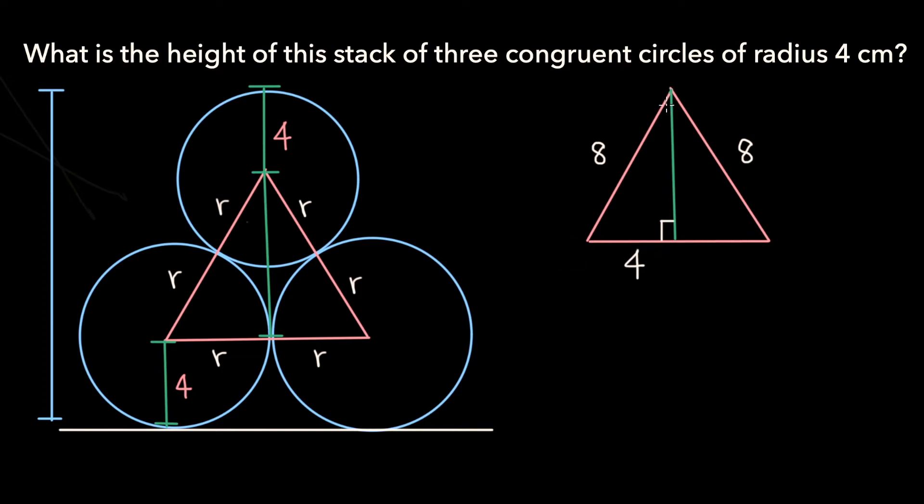And this means that we can apply the Pythagorean theorem to find the remaining side length of the equilateral triangle. If we do so, we get 4 squared plus h squared, where h represents the height of the equilateral triangle, is equal to 8 squared. 4 squared is 16, and 8 squared is 64. So 16 plus h squared is equal to 64. And if we subtract 16 from both sides, we get that h squared is equal to 64 minus 16, which is 48. The square root of 48 is 4 root 3. So the height of the equilateral triangle is 4 root 3.